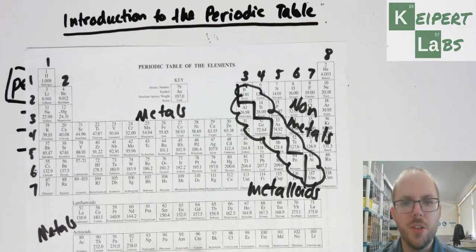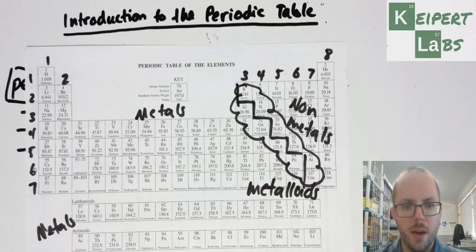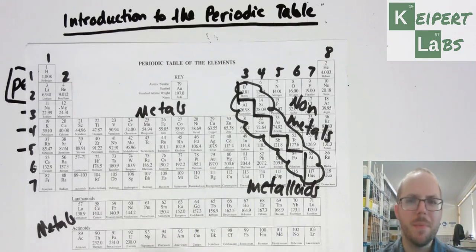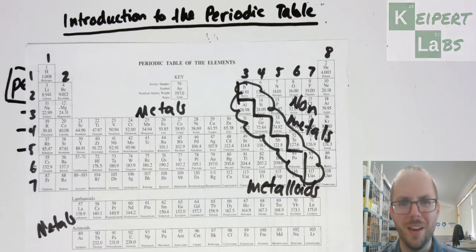So that's the kind of information that you need to be familiar with to start with - that we have columns known as groups, we have rows known as periods, we number them, and that we're also able to find metals, non-metals, and metalloids. Alright, that wraps up our video. Thanks very much for watching. Bye for now.